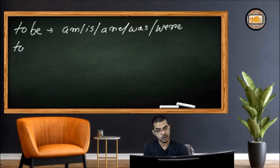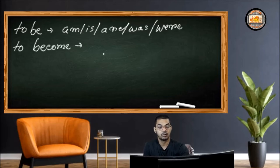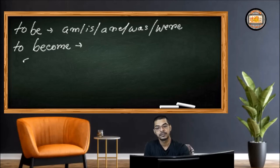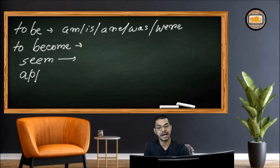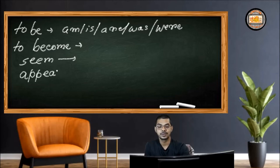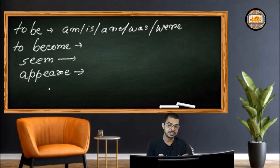Then comes 'become,' then 'be,' 'become,' and there are other verbs like 'seem' and 'appear.' All these verbs — 'be,' 'become,' 'seem,' 'appear' — are linking verbs.